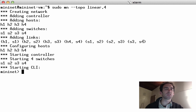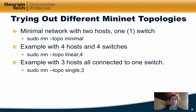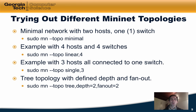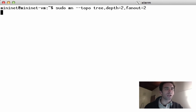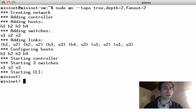As a third example, we can create a topology where three hosts are all connected to a single switch, which we have looked at earlier in this lecture. Finally, we could use Mininet to create a tree topology with a predefined depth and fanout. Again, we see the same type of behavior, except the links reflect a tree-like topology.